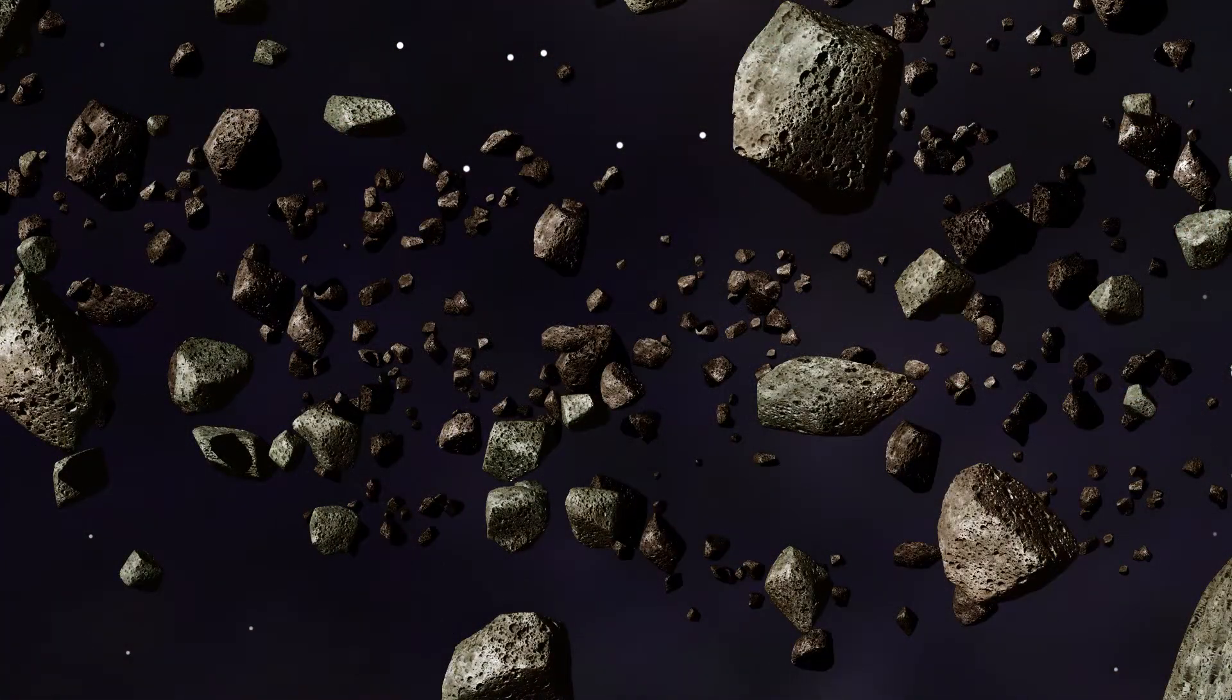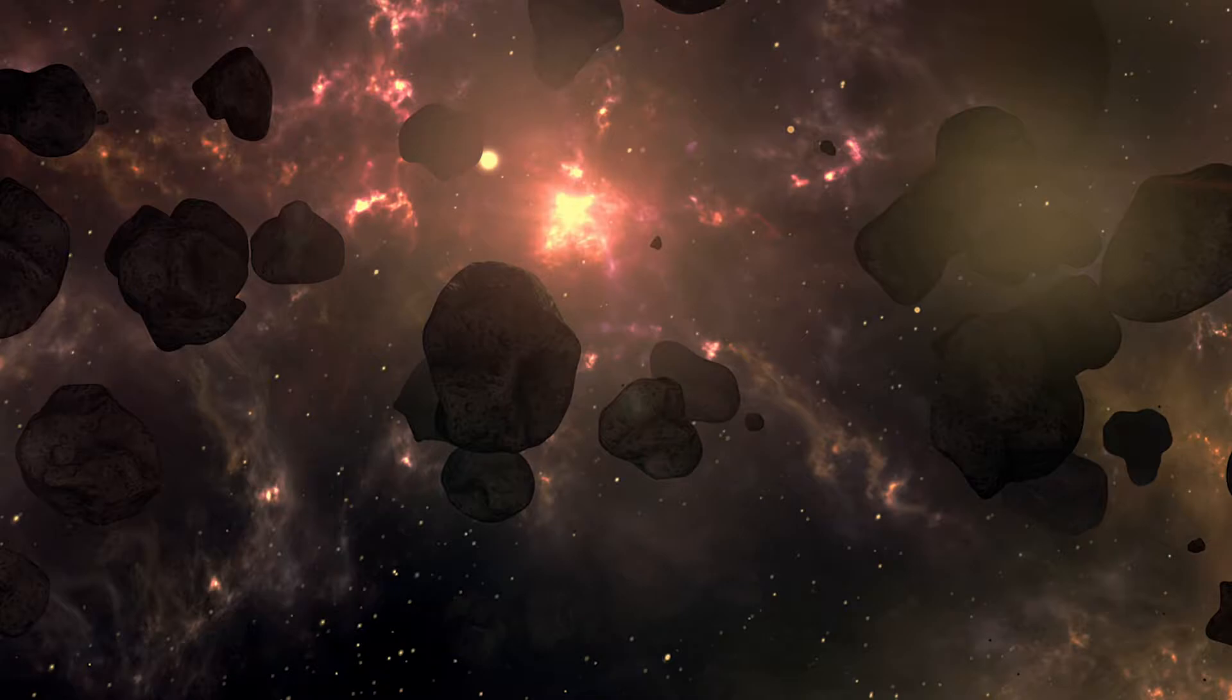Today, we will be talking about the Kuiper belt, not to be confused with the Oort cloud, which is an even more distant spherical region of icy comet-like bodies that surrounds the solar system.